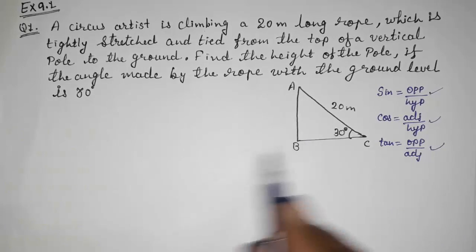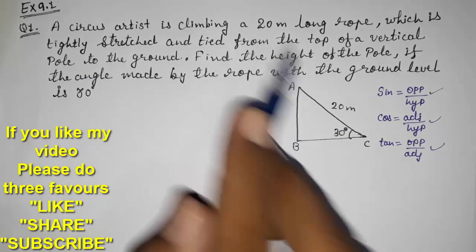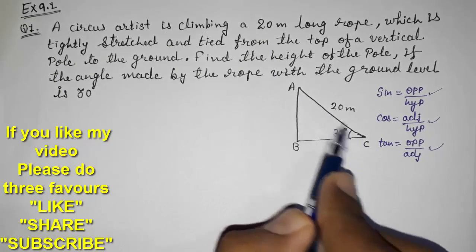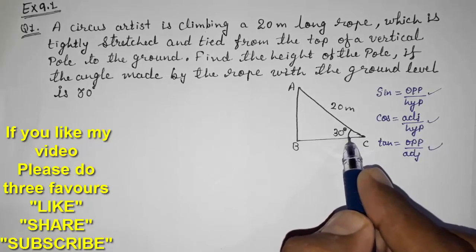Look at that. They told us one circus artist is climbing this rope. Look here, the artist is coming from here to here, and that rope is making 30 degrees with the ground.